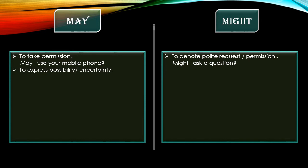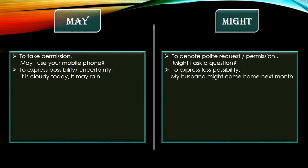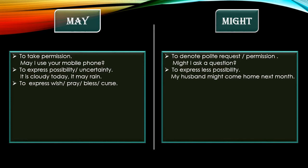May is used to express possibility and uncertainty — when something is not certain but is possible. For example: 'It is cloudy today, it may rain.' Might is also used to show possibility, but the difference is that 'may' expresses strong possibility while 'might' expresses less or weaker possibility. For example: 'My husband might come home next month' — she is not certain whether he is coming.